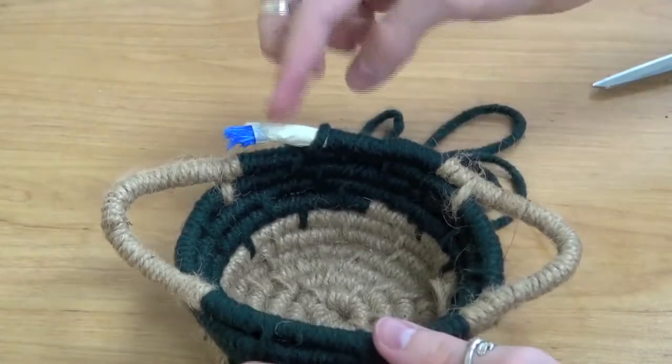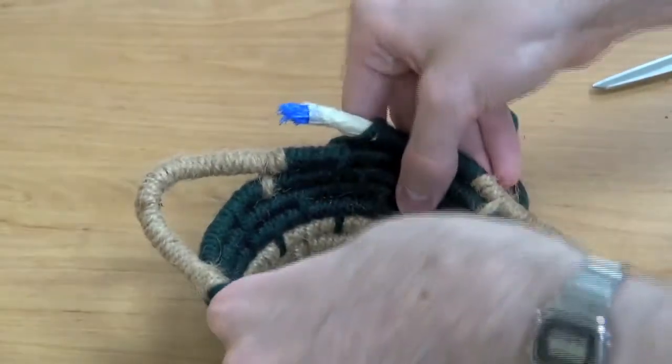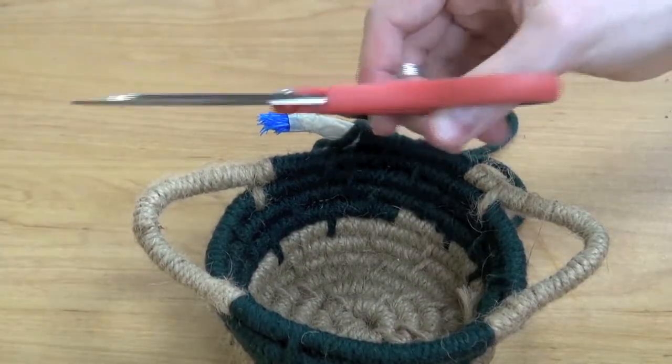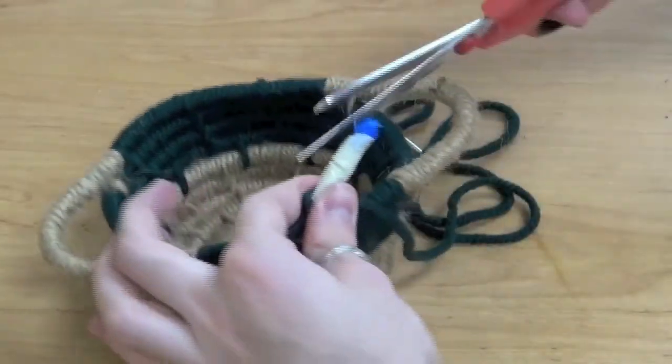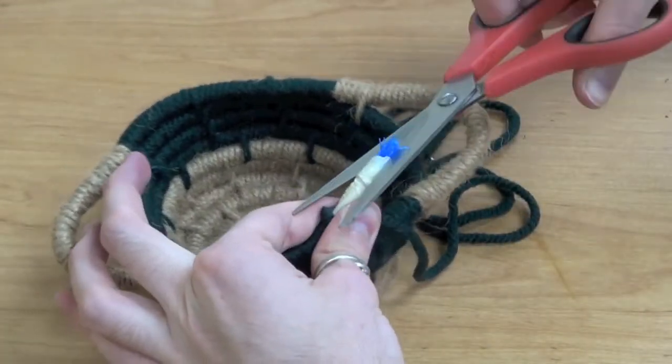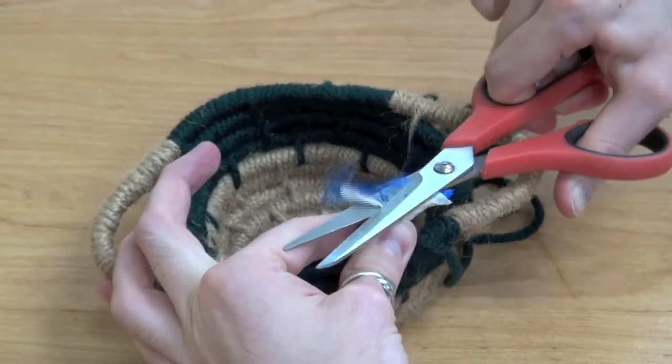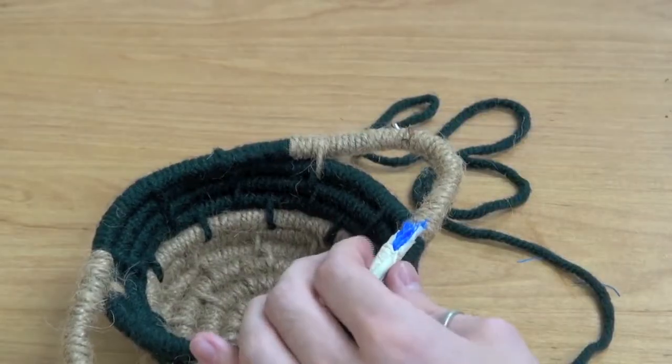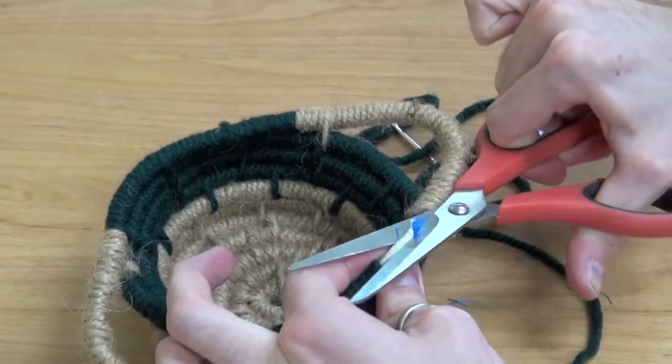Once you're done and you've run out of rope, here we're going to take our end, leave it just exposed, take our scissors and cut at an angle to make sure that we can lay it flat up against the previous surface. Making sure our rope is flat will ensure that it looks clean when we wrap it to finish it.